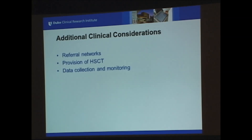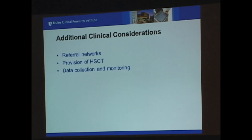I always like to end these talks by thinking about the implications of implementing a new newborn screening test. There are issues of referral networks — what do you do when you identify a baby through newborn screening, and how are you going to provide stem cell transplantation? There are also issues of data collection and monitoring to make sure children get the care you hope they get, as well as identifying opportunities to improve care delivery. Once you start systematically identifying children, it's an opportunity to refine care.